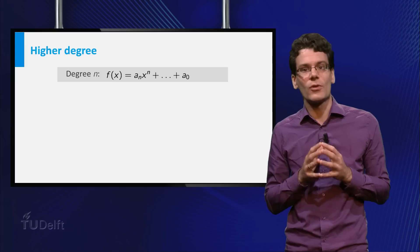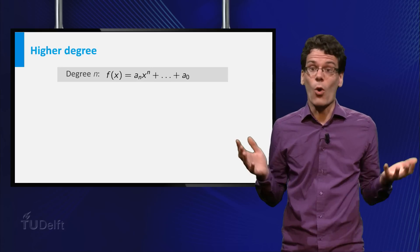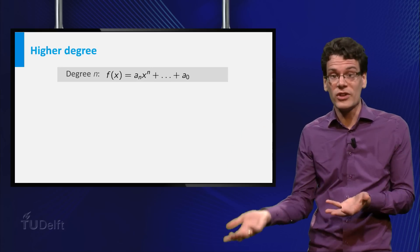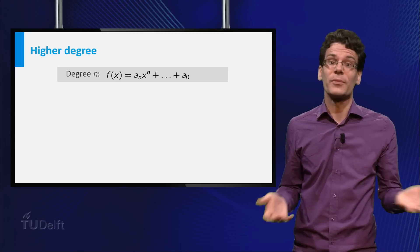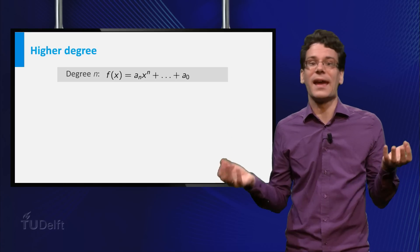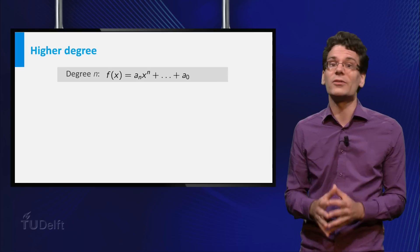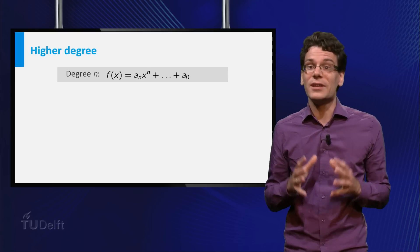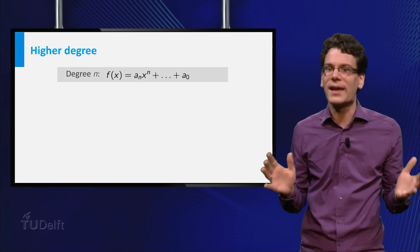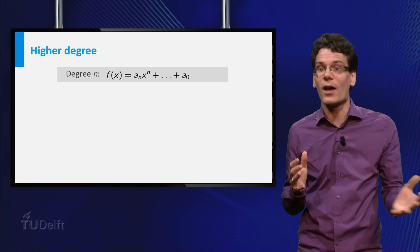What about polynomial functions of higher degree? Of course there is always a relation between the coefficients and the shape of the graph, but this relation becomes more complicated and obscure the higher the degree gets. We can say some general things though. It turns out that the degree is a measure of how complicated the polynomial function and its graph can be.